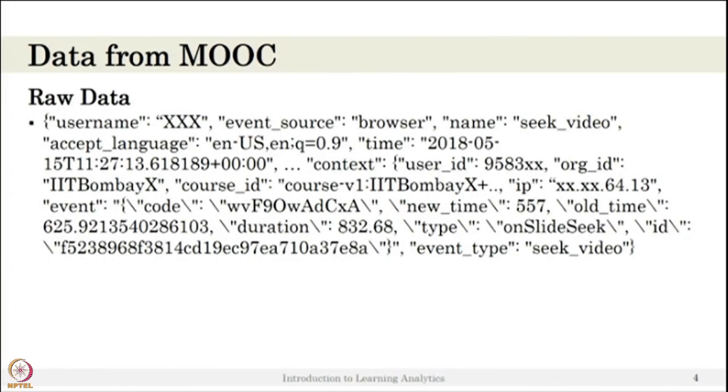Let us look at the raw data of MOOC collected from IIT Bombay X course. You can see the raw data: the username is anonymized, the event source is browser, and the event name is seek video. The learner is seeking the video and the timestamp tells when it happened. Also the user ID is there, the organization which is offering the course IIT Bombay X, and course ID. For the seek information, the context we need is from time - which time to which time the student seeks the video. The new time is 0.557, the old time is something else.